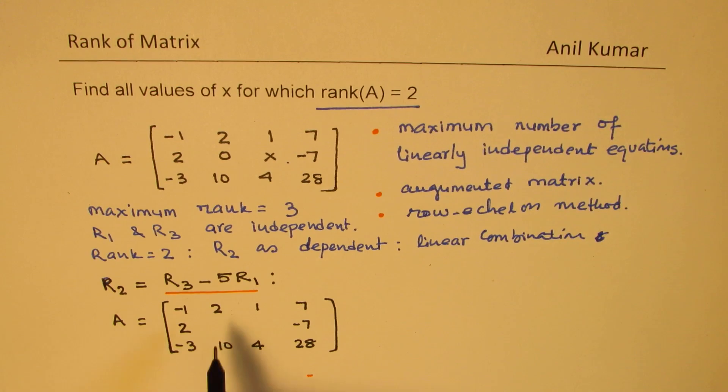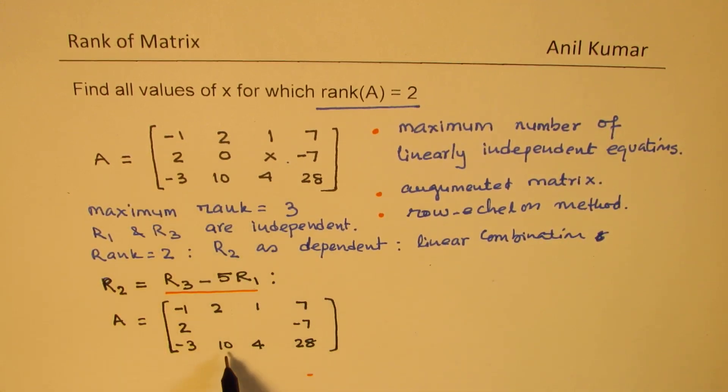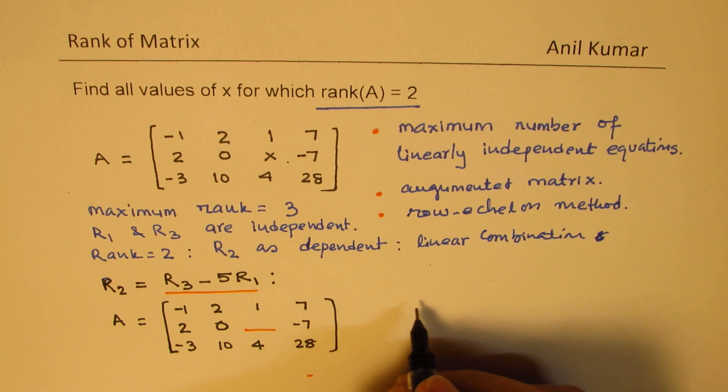We do get this value matching. Here also, 5 times 2 is 10 and 10 take away 10 is indeed 0. We do get that. That means the value of x we can actually find using this operation. It does make sense to you. R3 is 4.